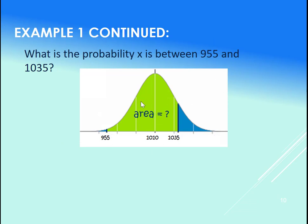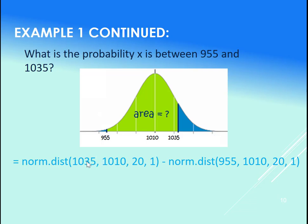Sorry, a little typo there. So we wanted this area here. Well, what we do is we subtract the two norm.dists. Okay, take the larger one first, so 1035 first, and then the 955. Let's try this out in Excel.